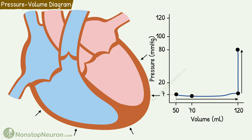But the pressure rises to about 80 mmHg. This is the pressure in the aorta by the end of diastole, so at this point the ventricles push open the aortic valve.